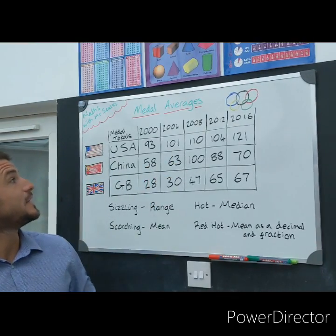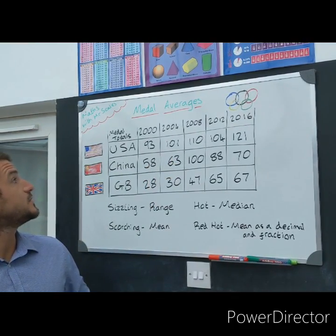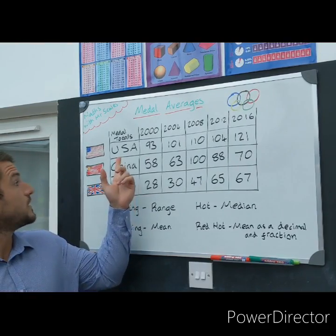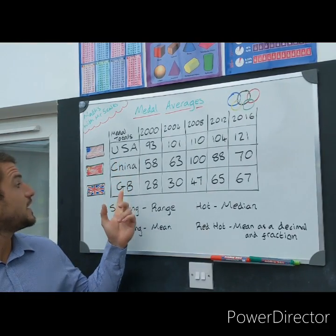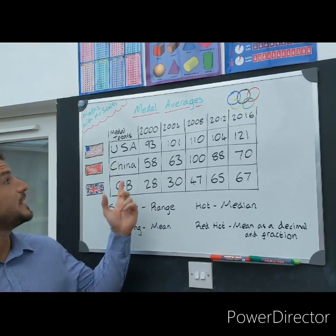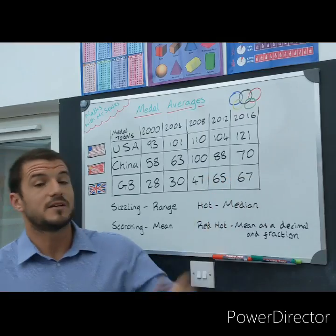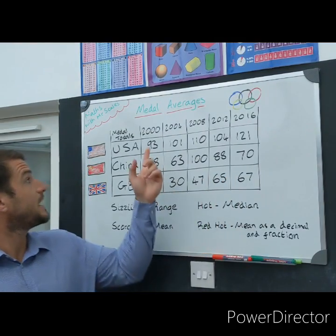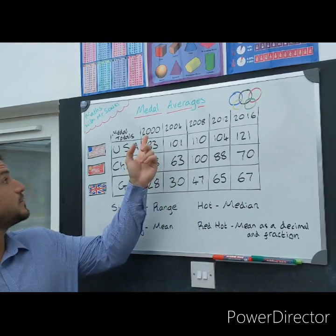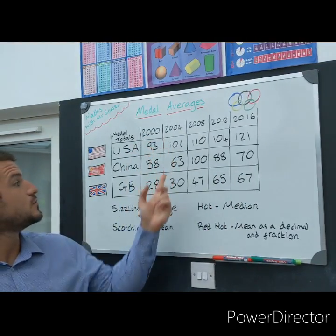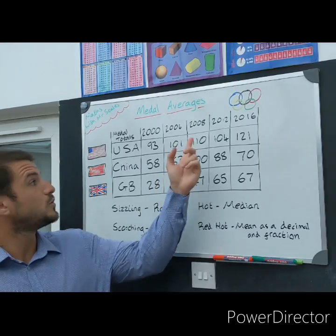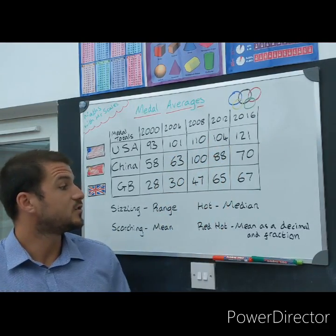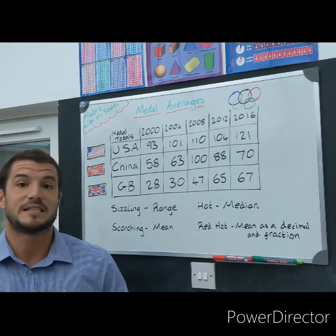Now with our Olympic theme, what I've decided to do today is look at the medal totals for the USA, China and Team GB across the last five Olympics. So we have our medal totals for 2000, 2004, 2008, 2012 and 2016.